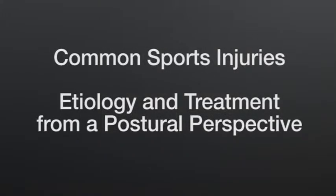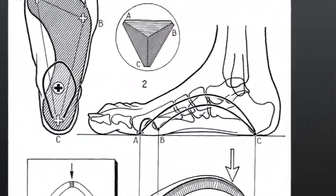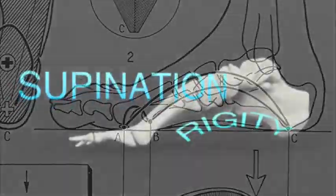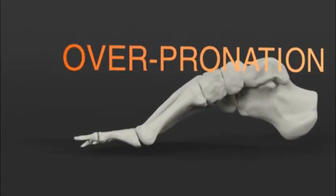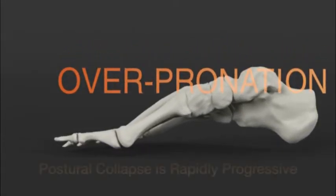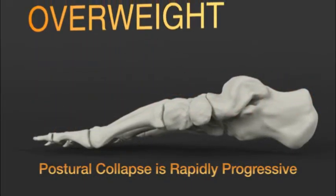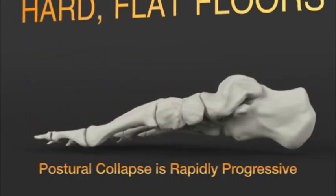Now let's examine a few common sports injuries and determine how both etiology and treatment are approached from a postural perspective. Throughout life, the intermittent compression of the tented structure of the foot will lead in many people to a postural collapse. Once collapse occurs, it is rapidly progressive because lever arms in the direction of further collapse increase and it is difficult to use the muscles alone to reverse this phenomenon.